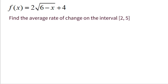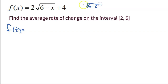What if you don't have a graph? How would you do this if you were just given the function with no graph? We want to find the average rate of change on the closed interval two to five. The first thing we do is find the output for two — when you have a function, you plug it in. So I have six minus two, take the square root of that, multiply by two, then add four. Six minus two is four, the square root of four is two, two times two is four, four plus four is eight.